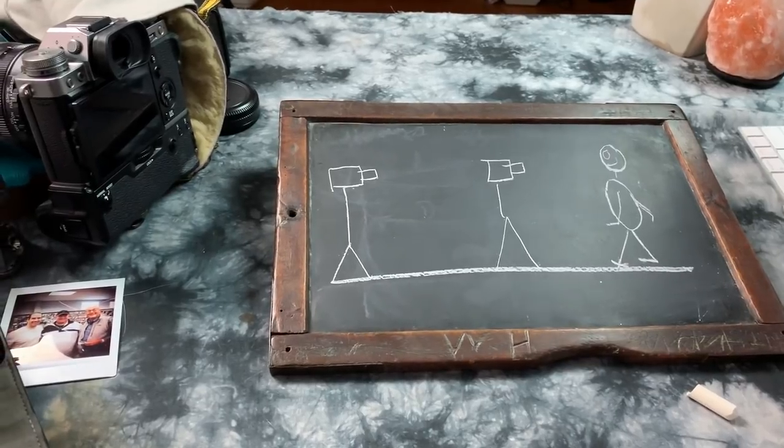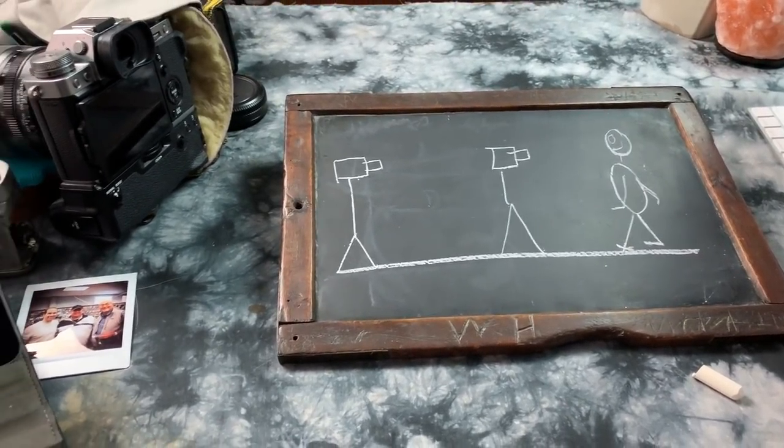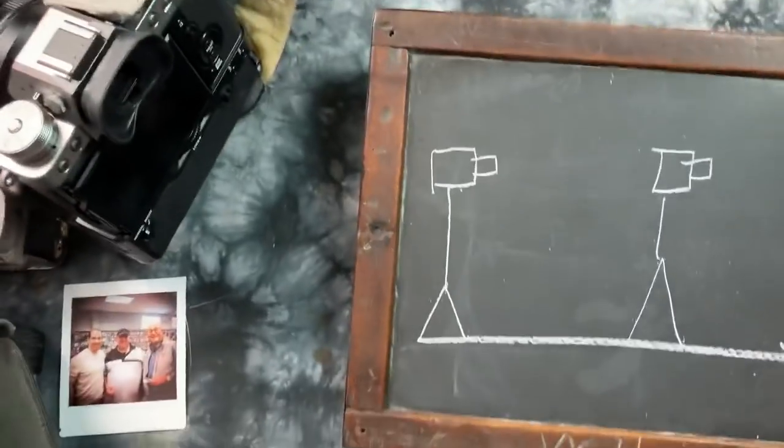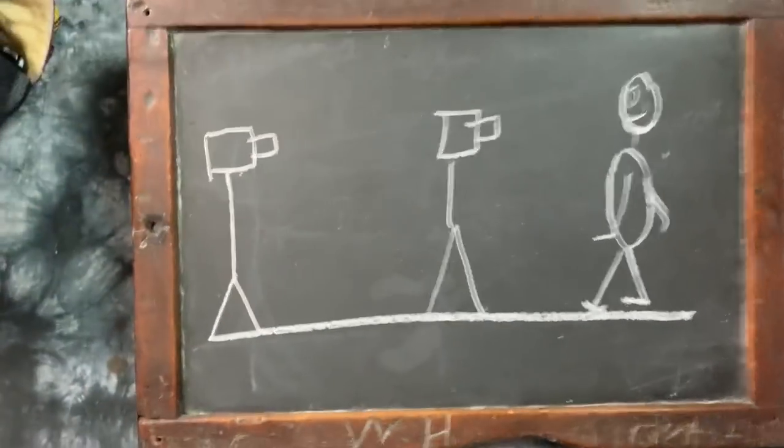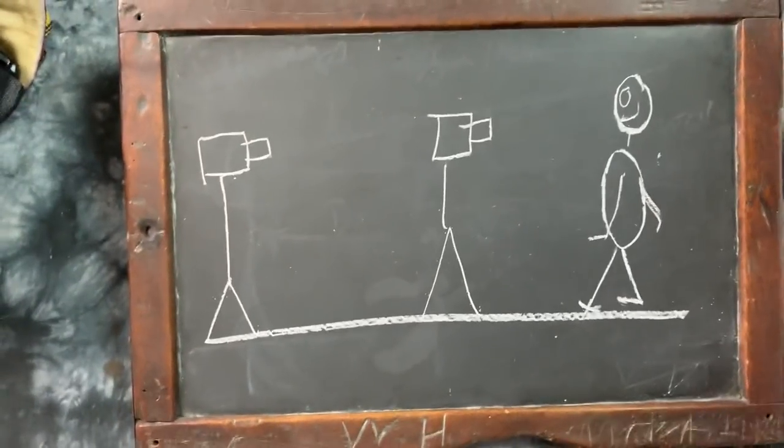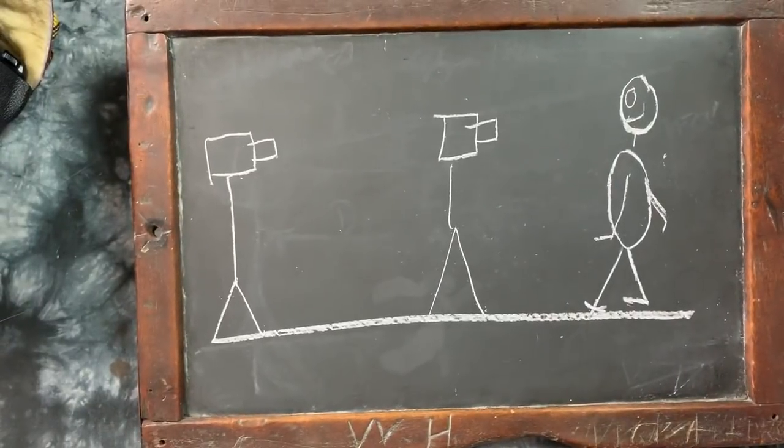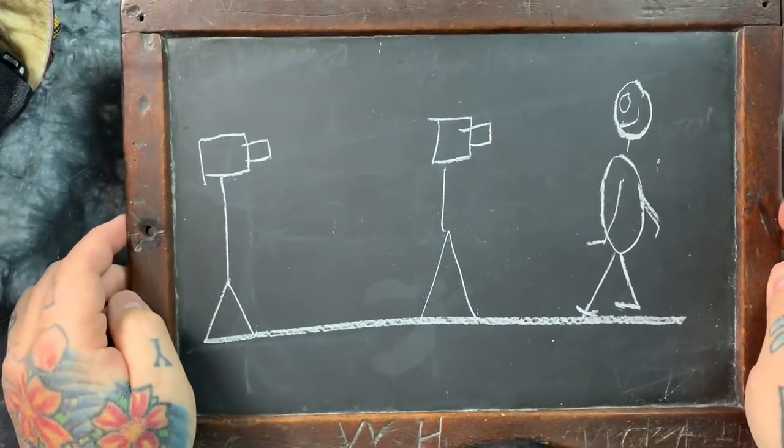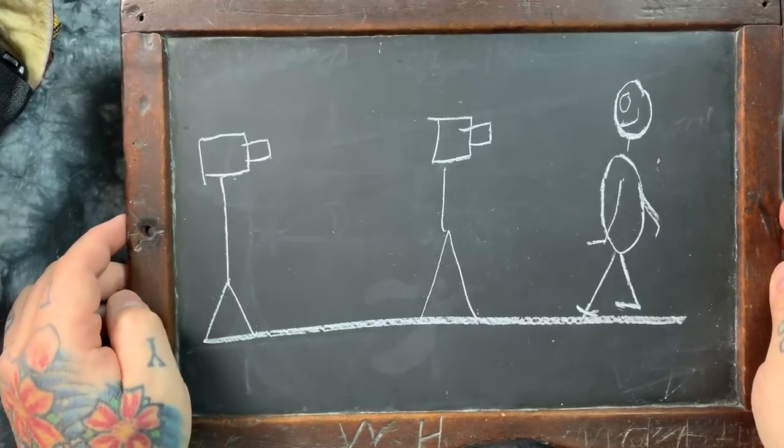So now we're going to talk about the differences between medium format and full frame or crop sensor and what the actual differences are. I like keeping things simple. What could be simpler than a little house on the prairie chalkboard for talking about closer, longer, and larger?